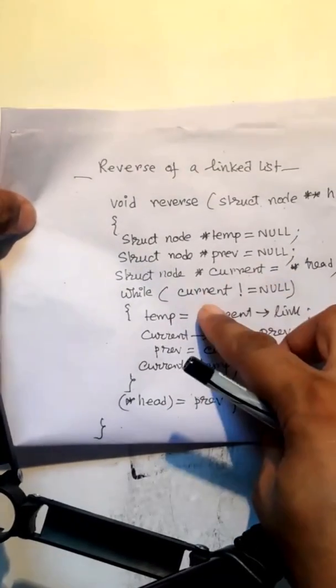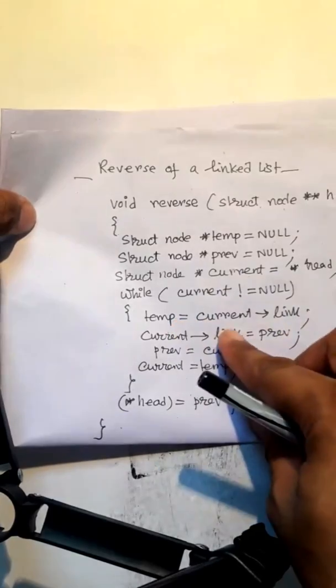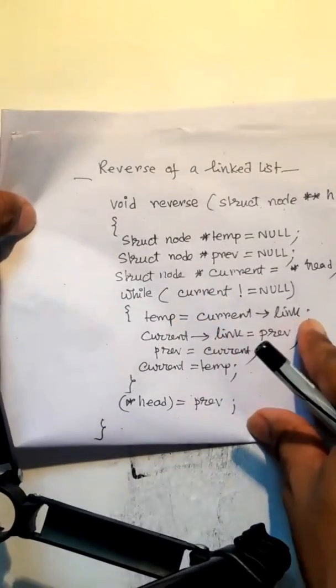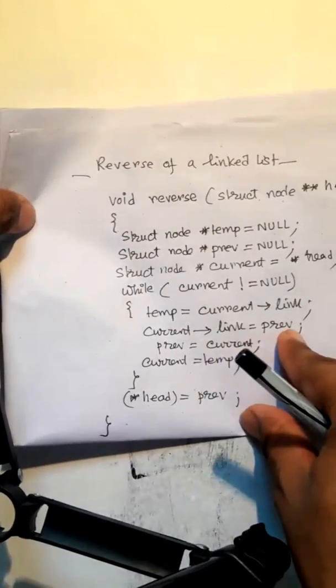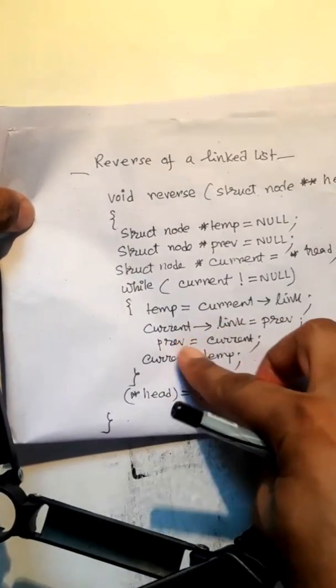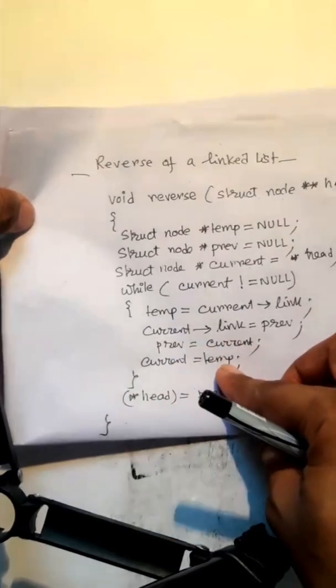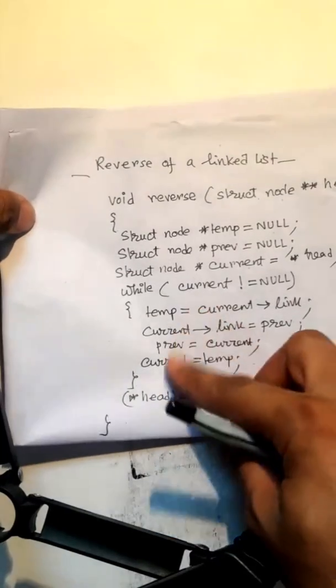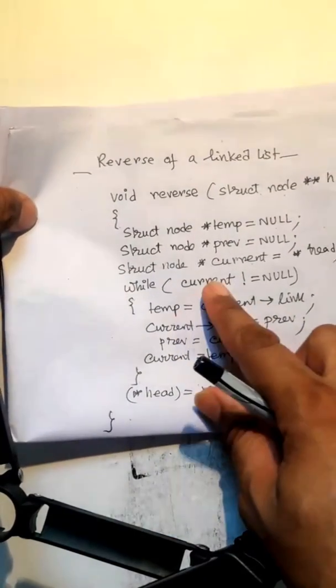While current is not equal to null: temp equals current pointer link, current pointer link equals previous, previous equals current, current equals temp. This is where the swapping is done.